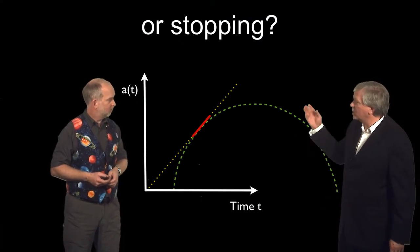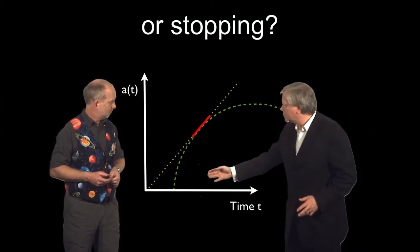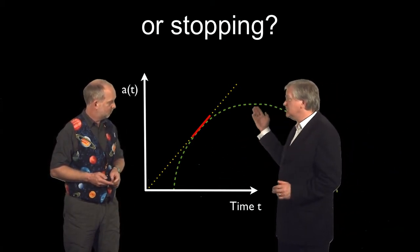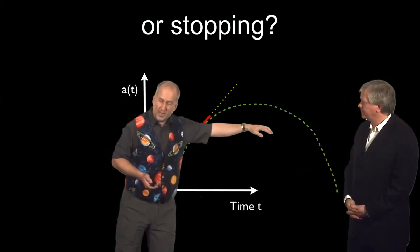What about one where there's lots of gravity? Gravity that's so strong that the universe actually does completely stop and start going in reverse. So the scale factor goes up and comes back down again. And here's a simulation of that.